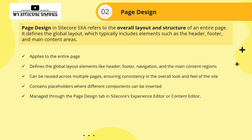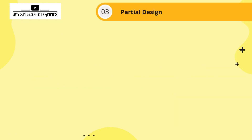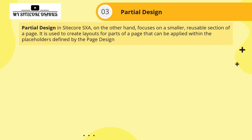Partial design in Sitecore SXA focuses on a smaller, reusable section of a page. While page design covers the entire page, partial design is a smaller unit — a reusable section used to create layout for parts of a page. It is applied within the placeholders defined by the page design.